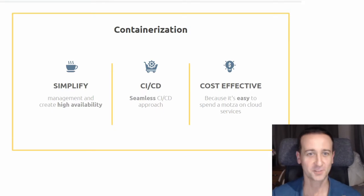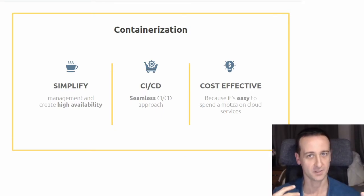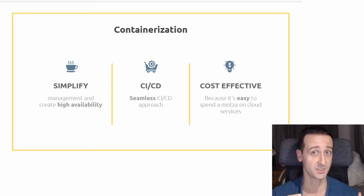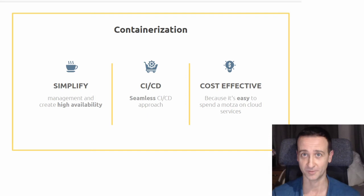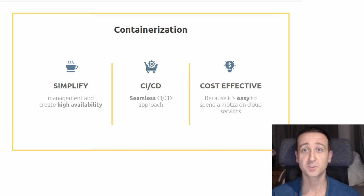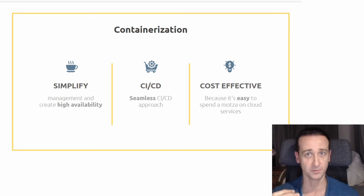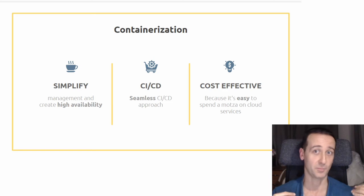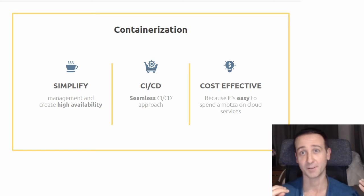A lot of people don't know this, but containerization was invented primarily for three main reasons. There was a need to simplify the management of services with high availability at scale, giving rise to the concept of a cluster of servers where you deploy your services. There was also a need for seamless integration with CI/CD tools, and that's where an immutable image from a Docker repository comes in really handy.